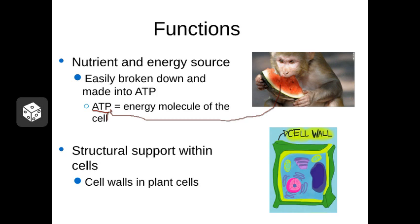We're going to talk about how this metabolic pathway works in more detail in a later chapter. The second function of carbohydrates is structural — some carbohydrates actually make physical structures inside and outside of cells. A great example is the cell wall that surrounds plant cells. Our cells don't have cell walls, but plants do. That stiff, rigid wall that protects the cell is actually made out of carbs, out of something called cellulose.